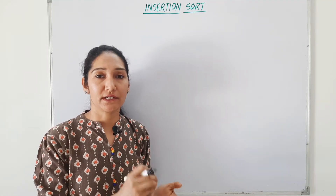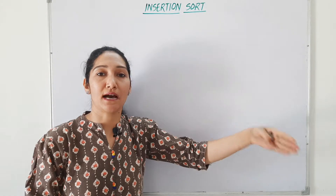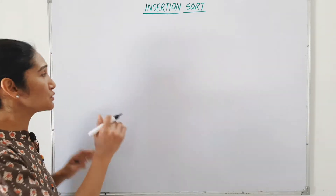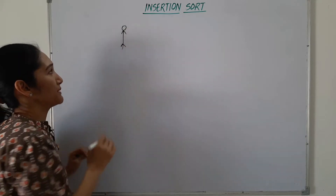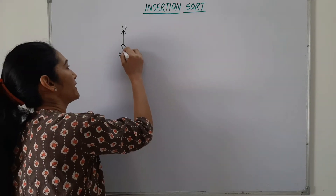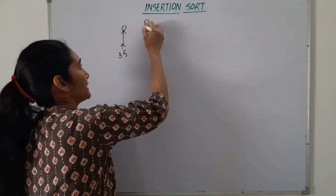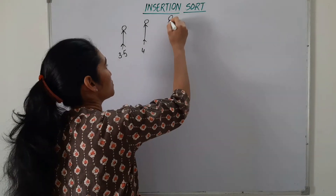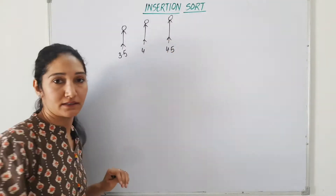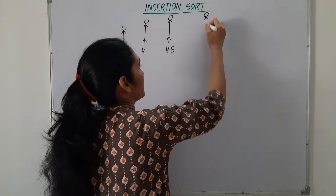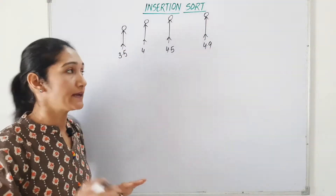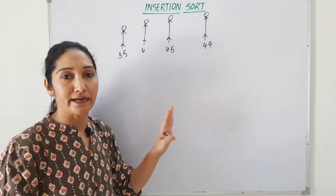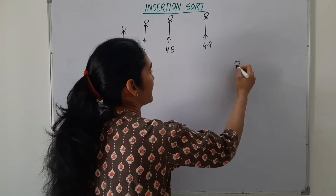The example is of our morning assembly line of students. That line is generally arranged height-wise — the student with the shortest height stands at the front, then in increasing order of height for the morning assembly line. Suppose four students are already standing: their heights are 4 feet, 4.5 feet, 4.9 feet — four students are already standing in the queue. Now a new student arrives.